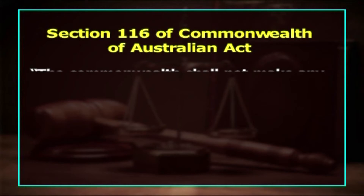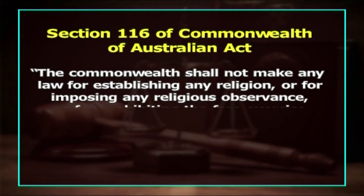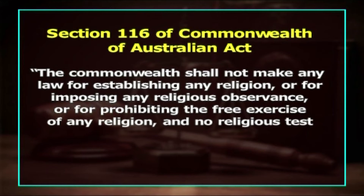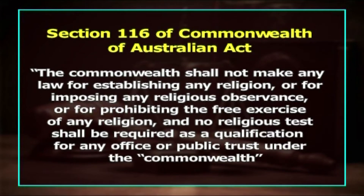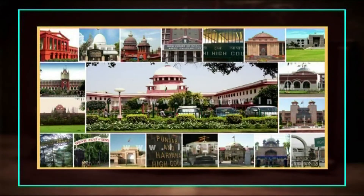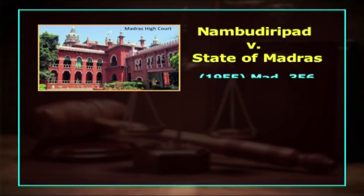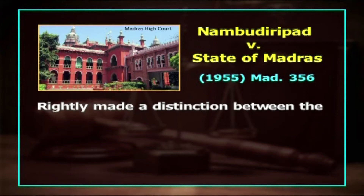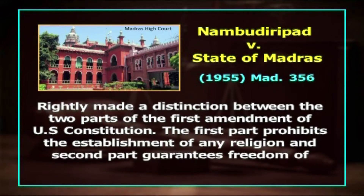Similarly, Section 116 of the Commonwealth of Australia Act says the Commonwealth shall not make any law for establishing any religion, or for imposing any religious observance, or for prohibiting the free exercise of any religion, and no religious test shall be required as a qualification for any office or public trust under the Commonwealth. The Indian courts have relied on the concept of freedom of religion provided by the First Amendment of the U.S. Constitution. The Madras High Court in Nam-Buddhiripad v. State of Madras made a distinction between the two parts: the first part prohibits establishment of any religion, and the second part guarantees freedom of religion to all persons.